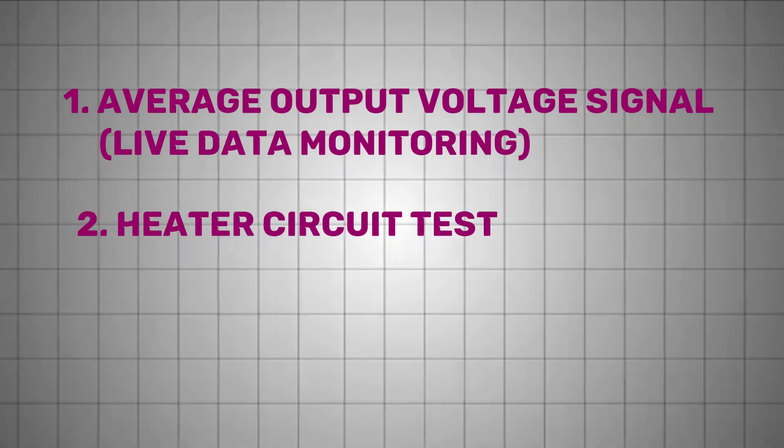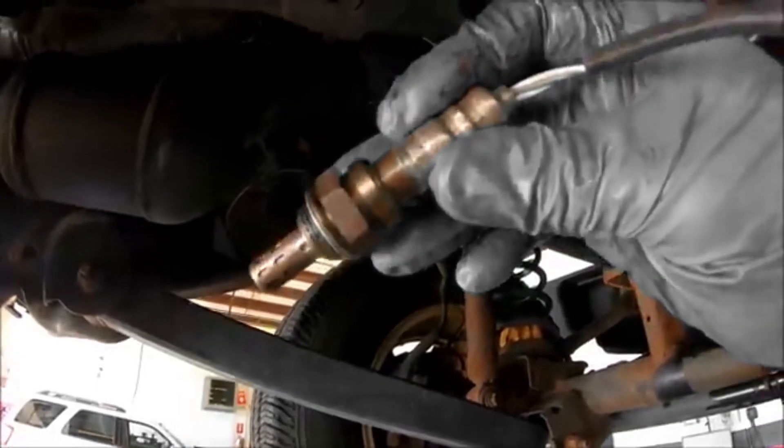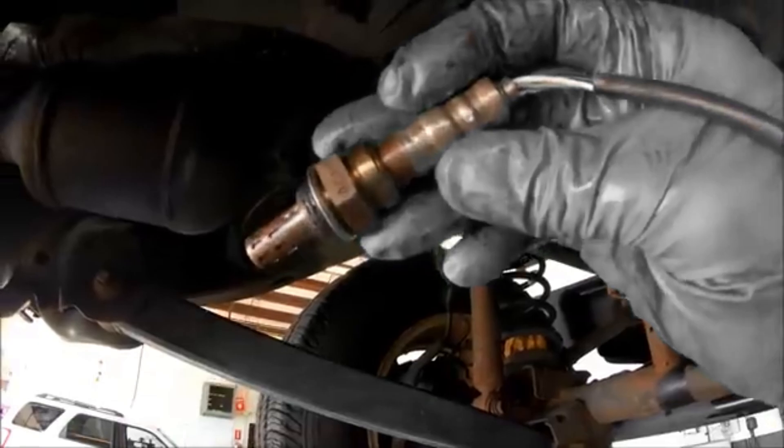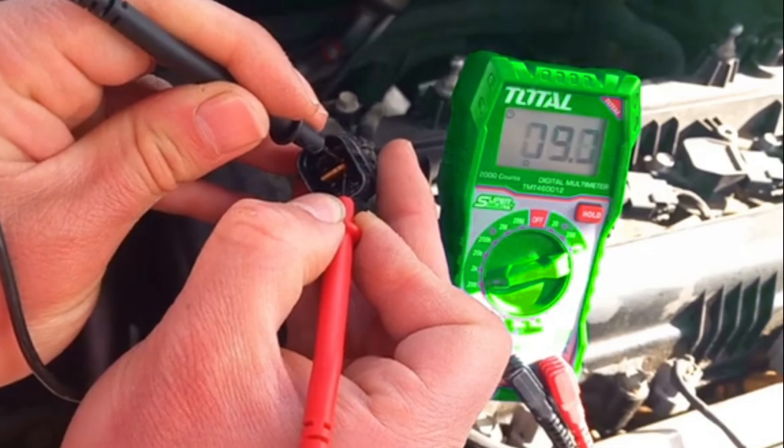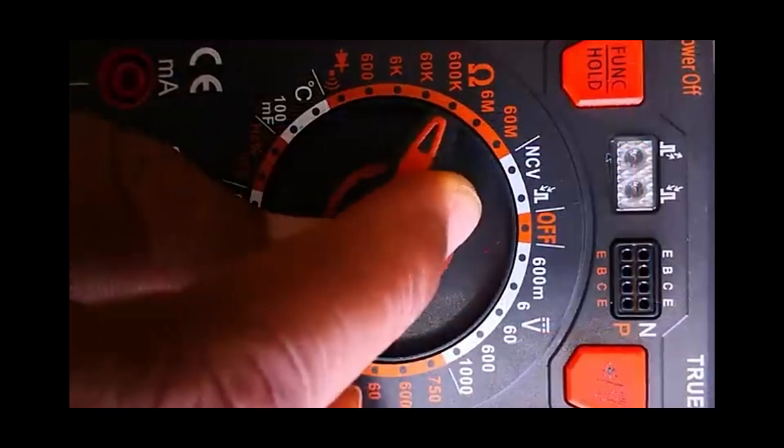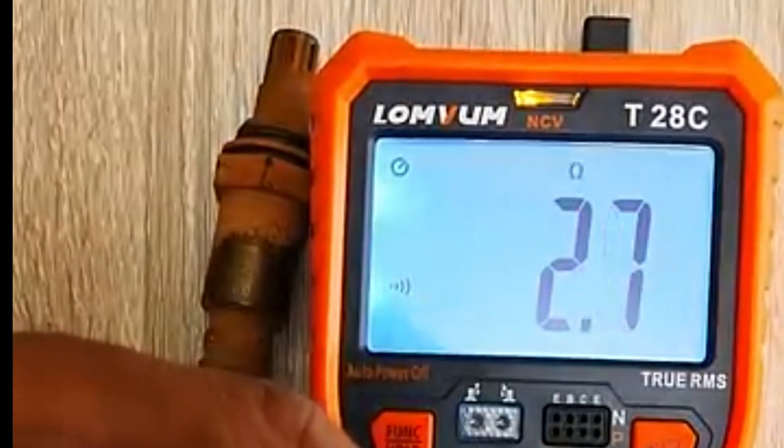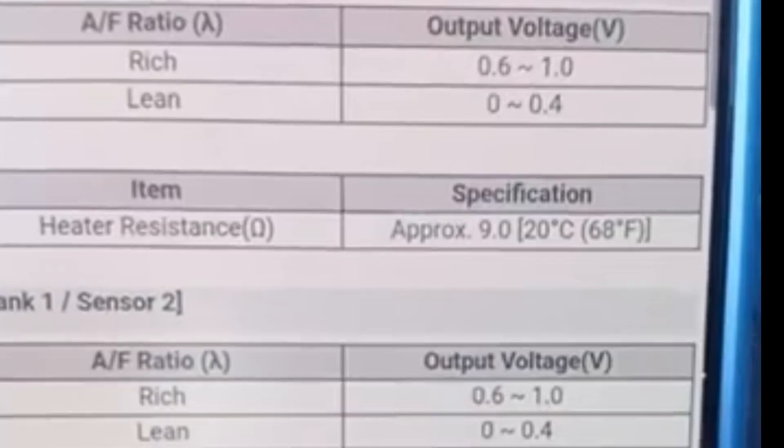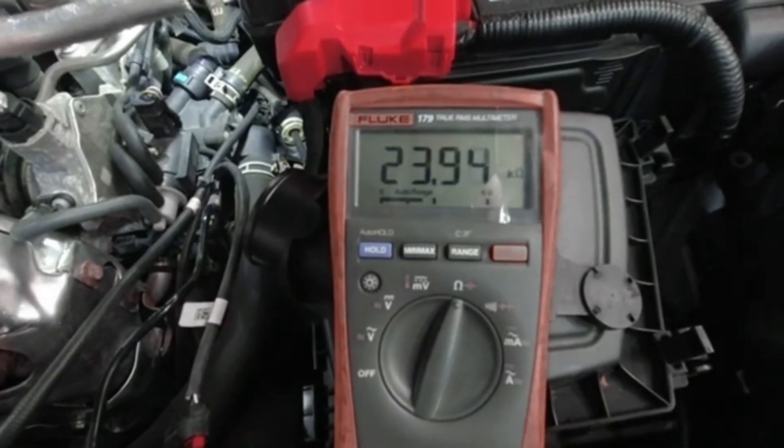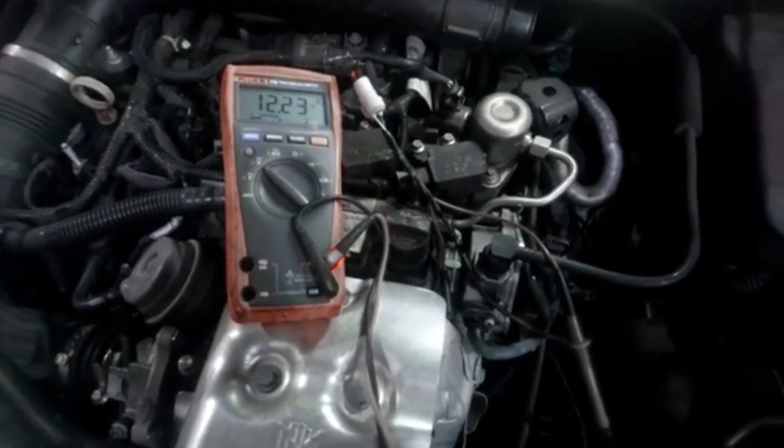Next is the heater circuit test. Most modern oxygen sensors are heated, meaning they have an internal heating element that helps them reach operating temperature quickly. This test is straightforward and can be performed using a multimeter or a current clamp. With the sensor disconnected, you can measure the resistance across the heater terminals. A typical good heater circuit will have a resistance within its specification, which depends on the sensor design. If the resistance is significantly higher or reads open circuit, it means the heater has failed.